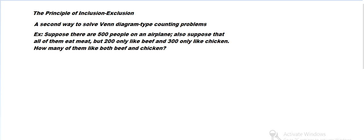For example, let's say we have 500 people on a plane, and all of them eat meat, but only 200 like beef and 300 like chicken. Let's change that to 400. So how many of them both like beef and chicken?